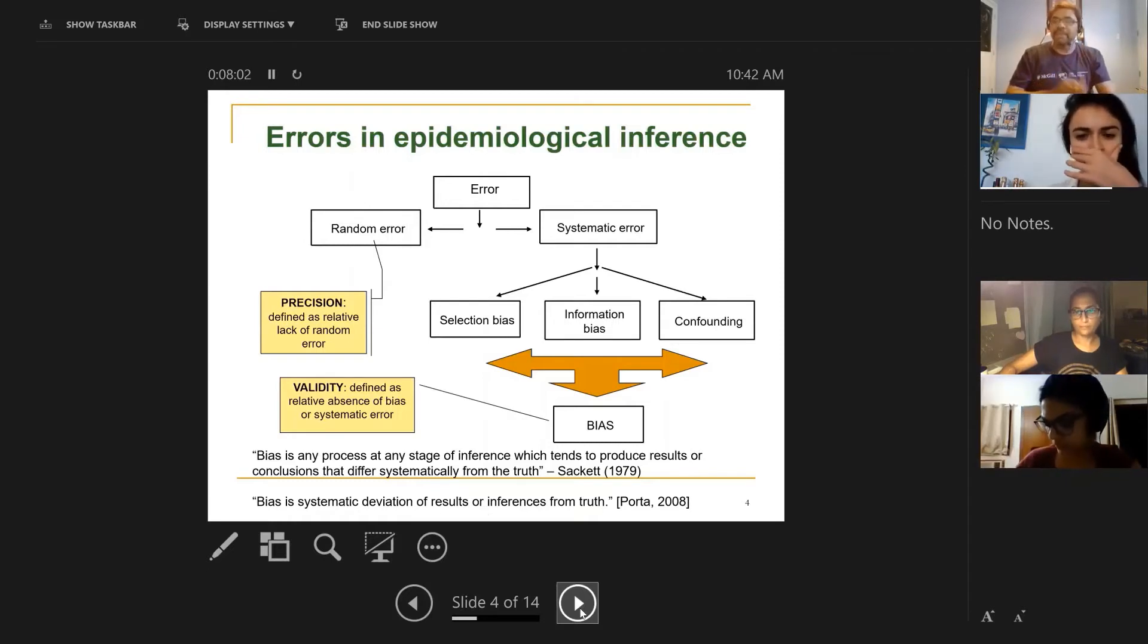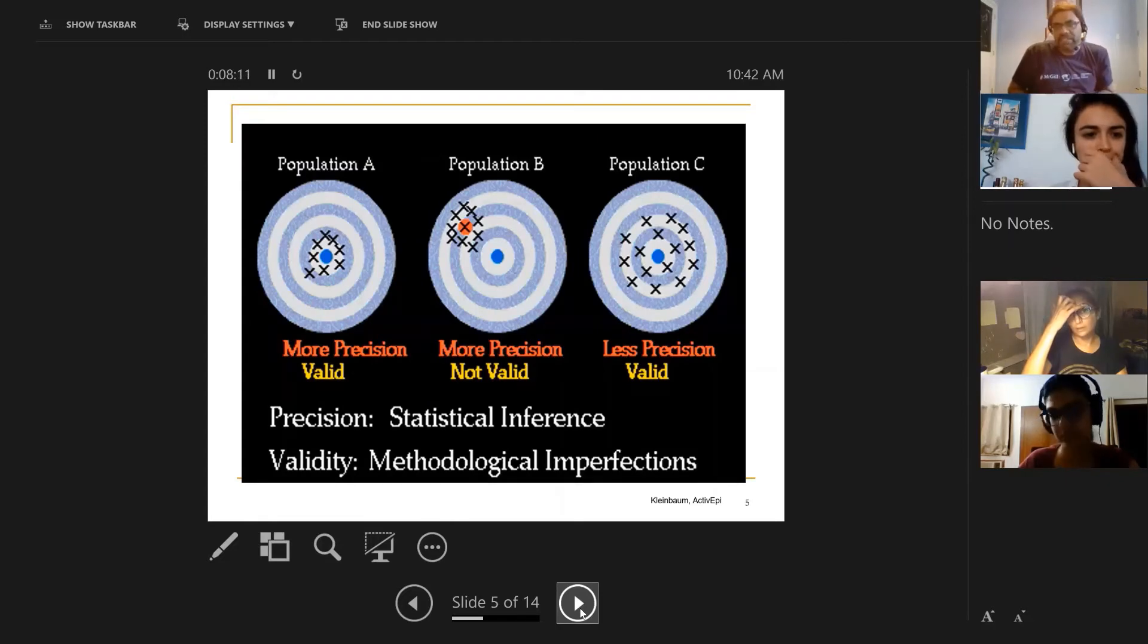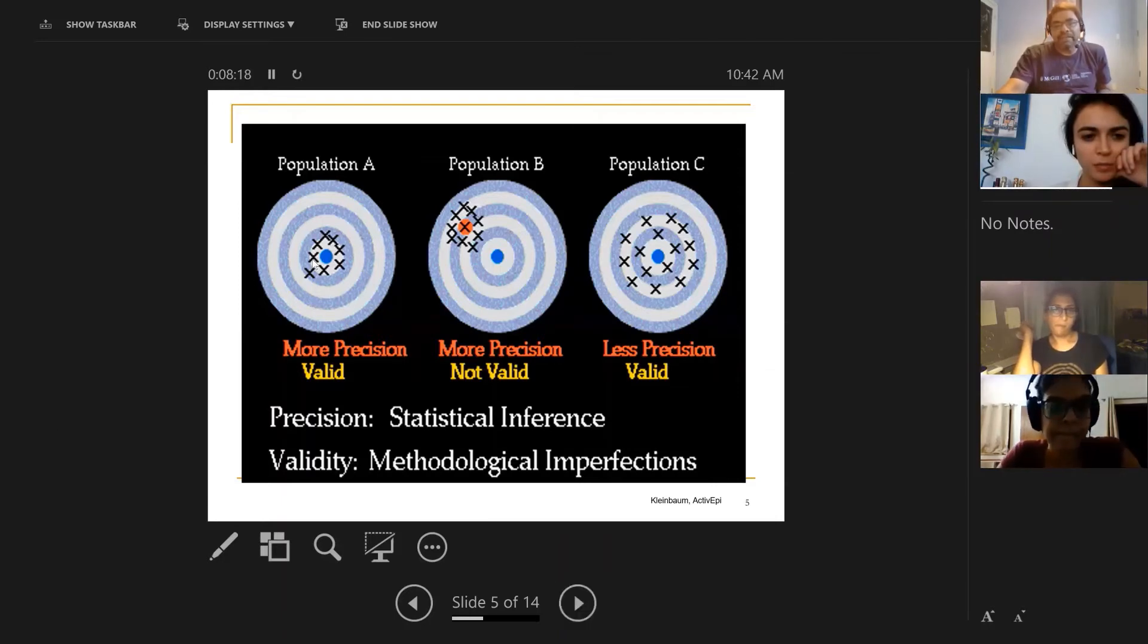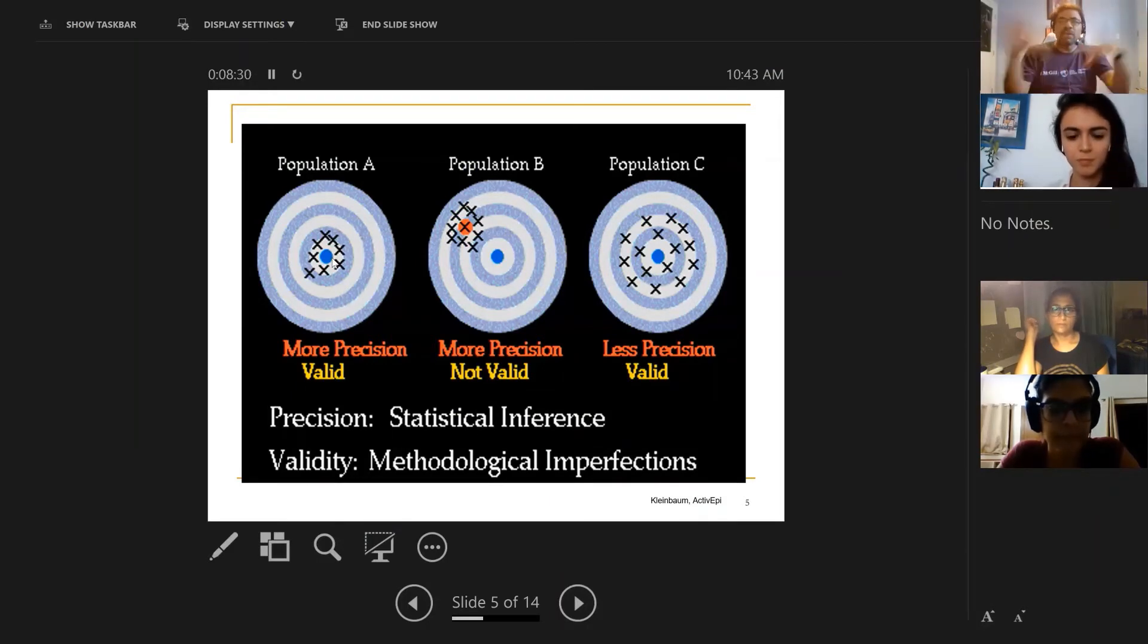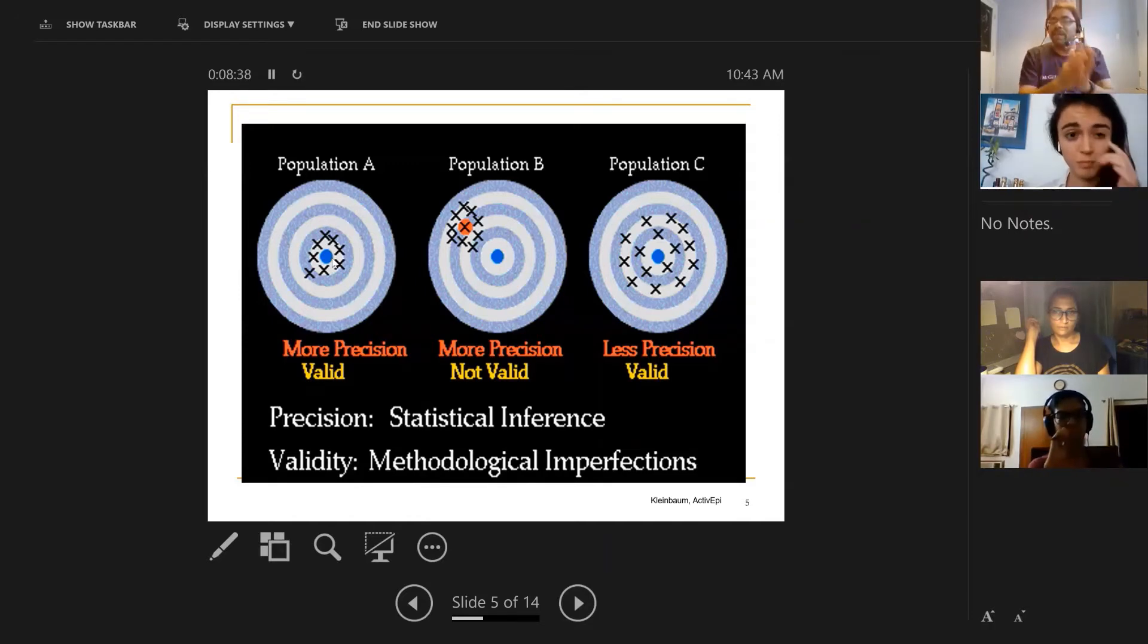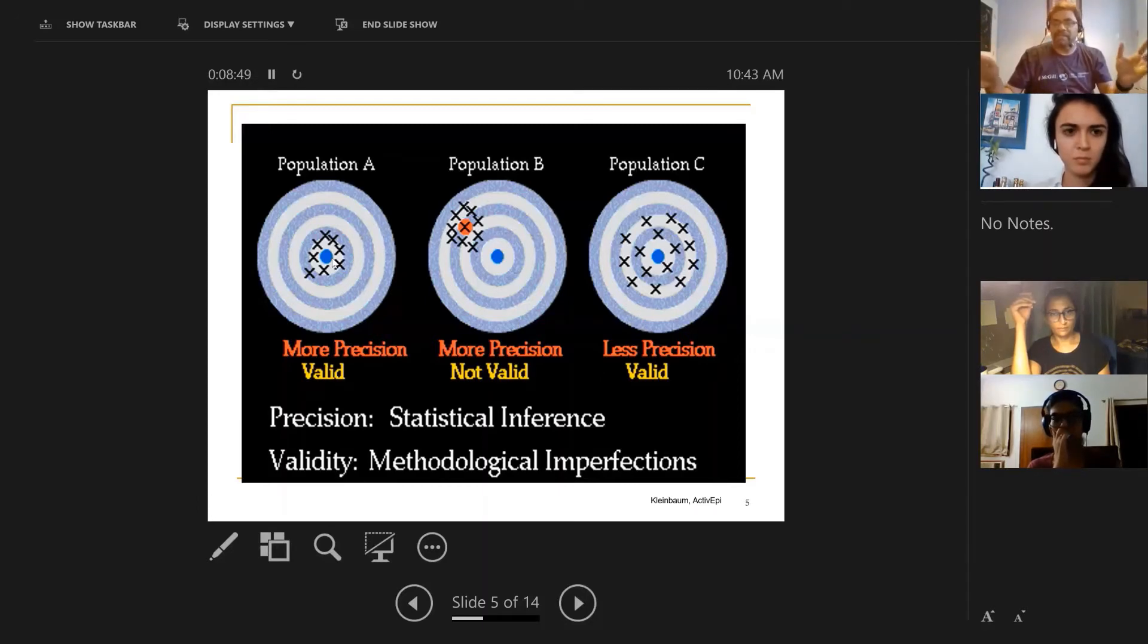This is a beautiful illustration. Think of a bullseye. In the first situation, you're hitting the bullseye beautifully. All your shots are close to the bullseye, all your shots are closely packed near each other, which means you're not spraying your darts or your bullets. You're both hitting the bullseye and you're hitting it again and again and again with consistency. That's a situation where you're both valid because you're hitting the truth and you're precise because you're not spraying the bullets all over the place.